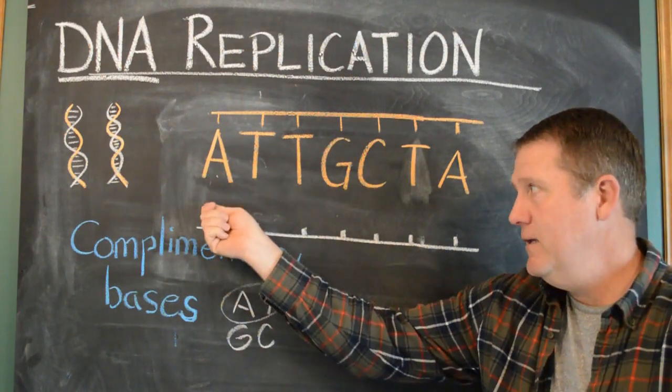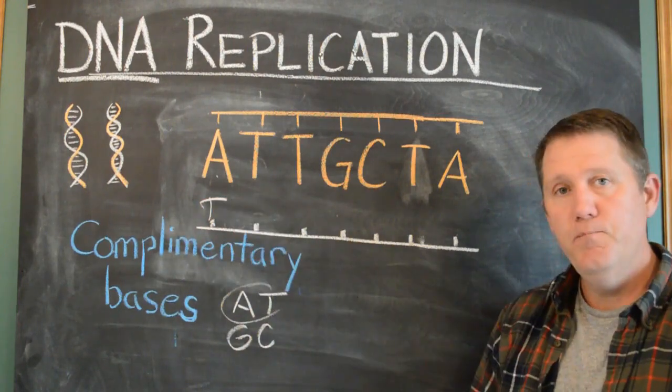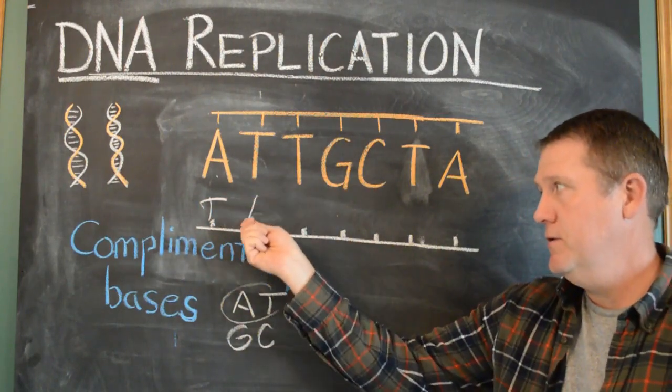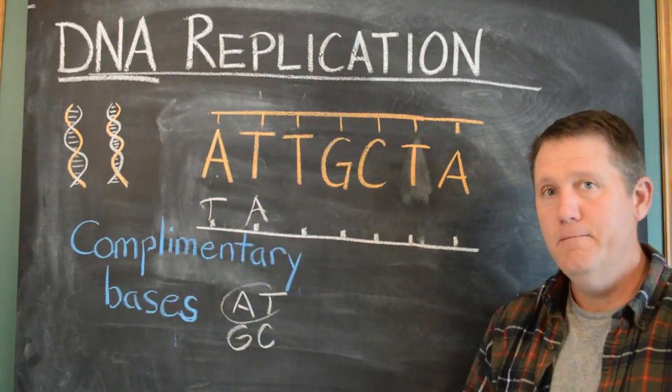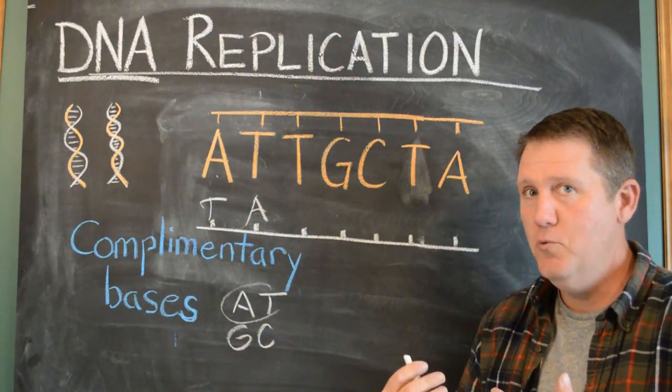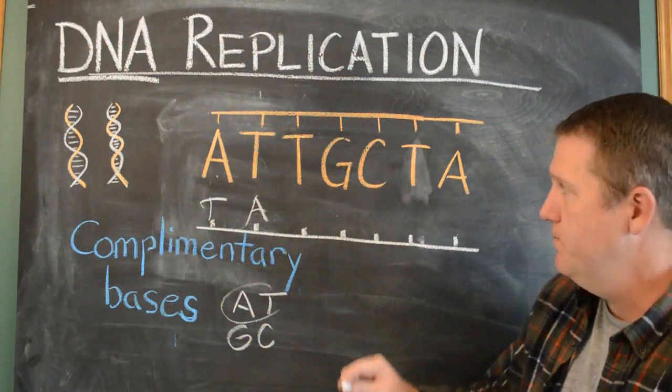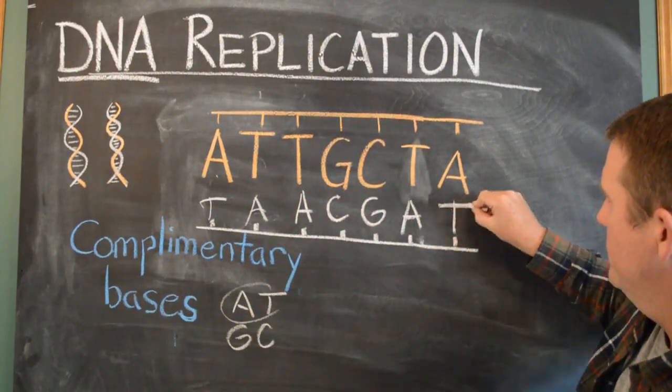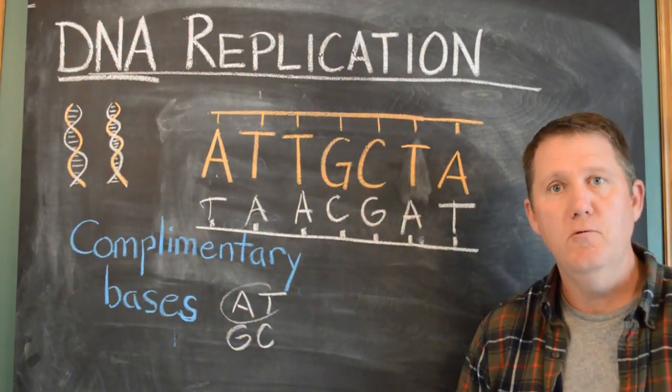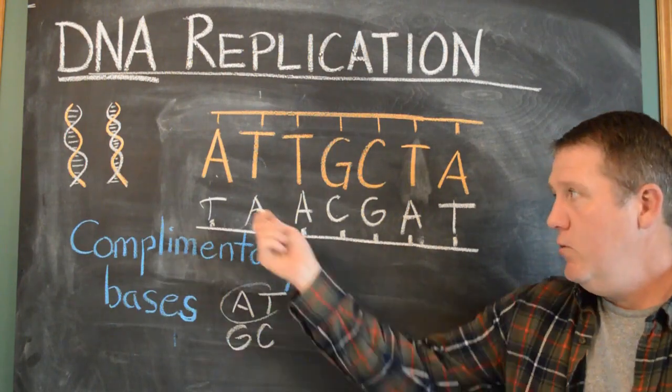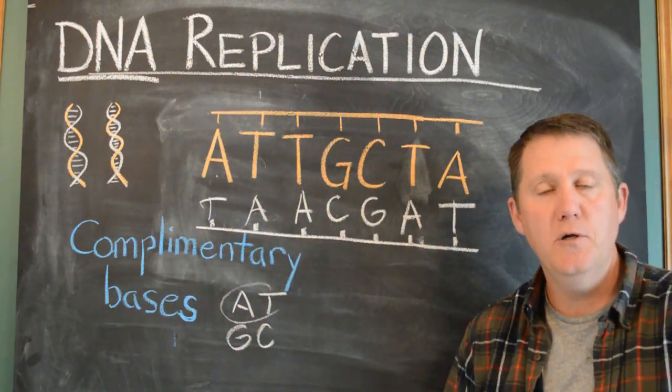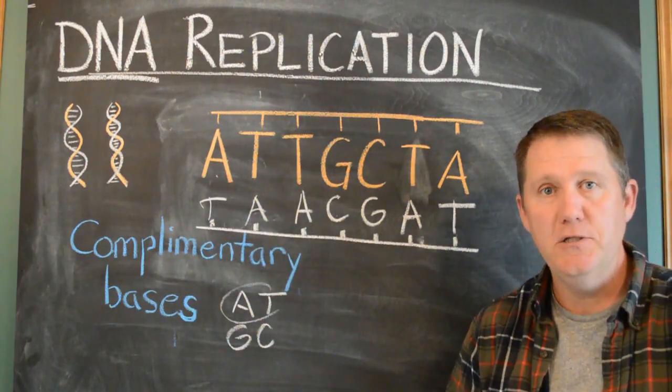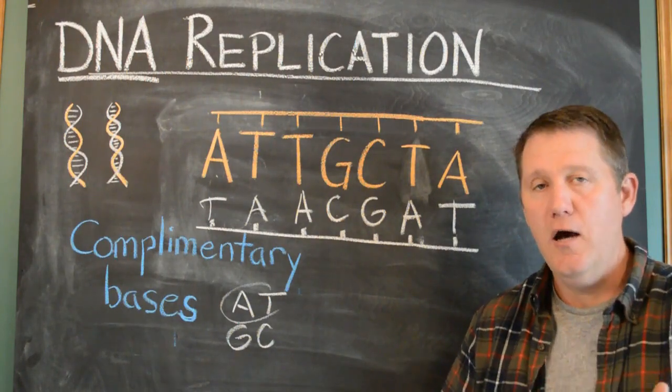Let's apply it to this. Complementary to A is T, and complementary to T is A. Now that you got that, you can probably do the rest yourself. This is pretty simple. There you go. We already know what the other strand is going to be. And this actually suggests how DNA copies itself.